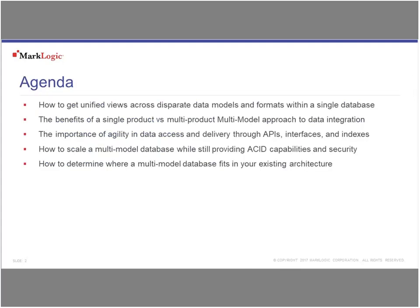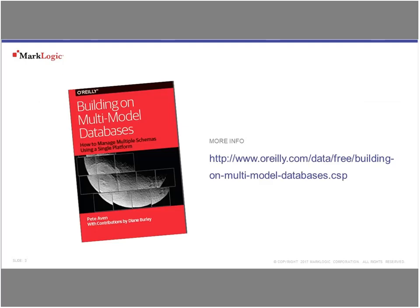Looking at the agenda, we're going to take a broad view today — we're not going to drill down too deep into any one technology. This is going to be a general overview, looking at how to get disparate data into a single database and the implications of that. This is based on a book by Pete Aven called Building on Multi-Model Databases, and it's free from O'Reilly. You can also get it from the MarkLogic site.